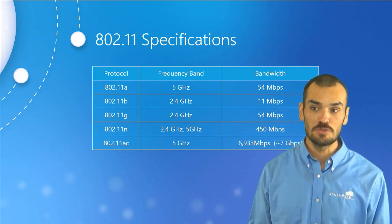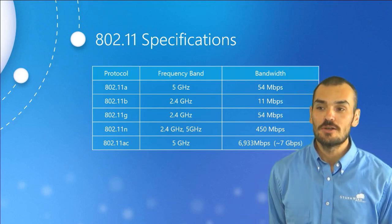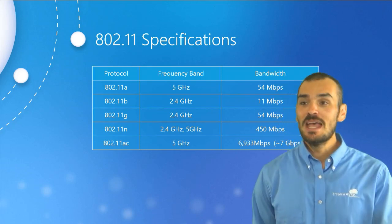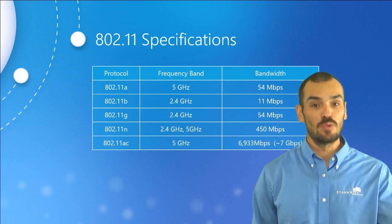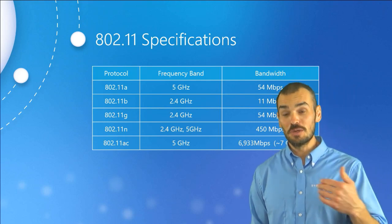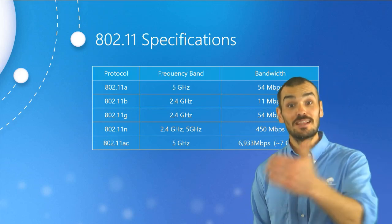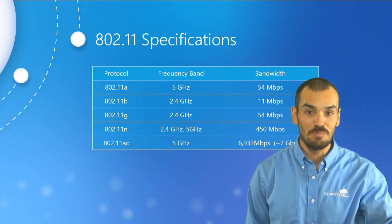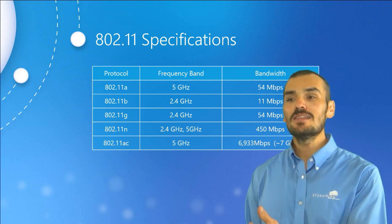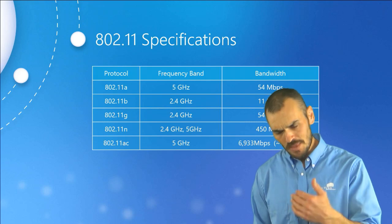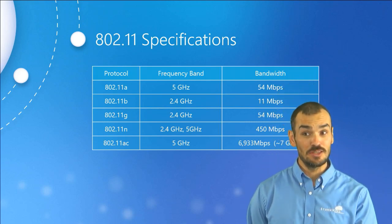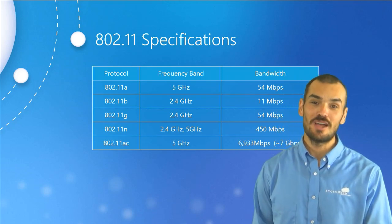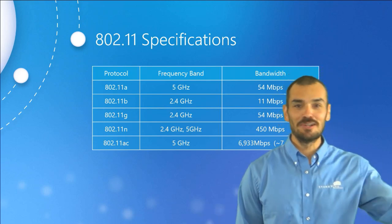Fast forward to 802.11g in 2003 — this was an attempt at the best of both worlds, going back to the 2.4 gigahertz band. It began the trend of faster speeds with broader coverage. Previously you would either get faster speeds at a smaller distance, or longer distance at a slower data rate. The 802.11a speed via OFDM was combined with 802.11b coverage to give us 802.11g. It was backwards compatible with 802.11b, but this came at a cost — if you had one single b device, everybody would have to slow down to accommodate it.